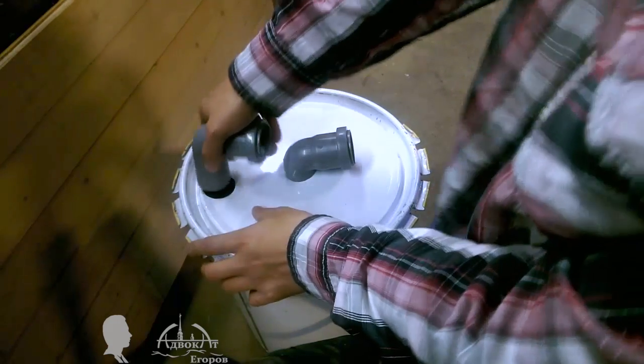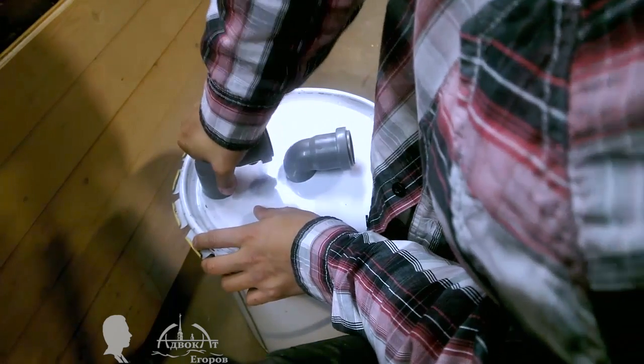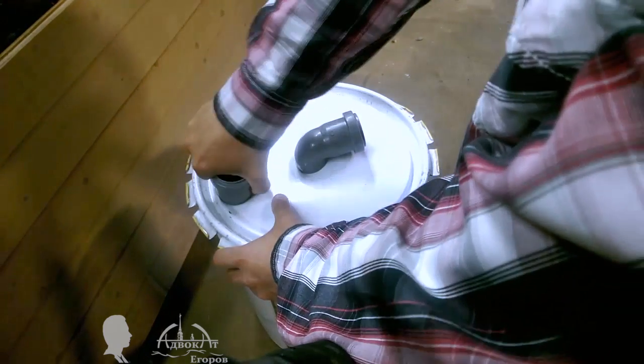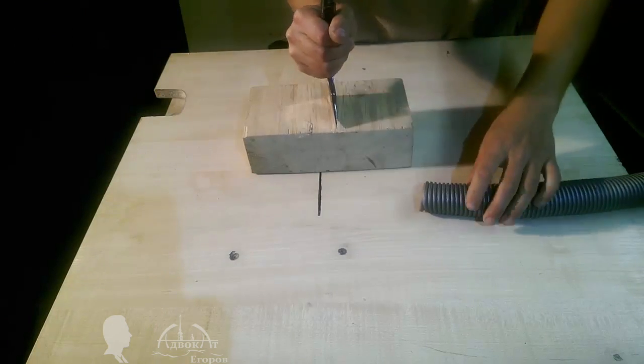Then I inserted both fittings into the openings and connected the hoses. I didn't even have to use sealant. That's all there is to it. It literally took me two minutes to make a fully functional cyclone separator.